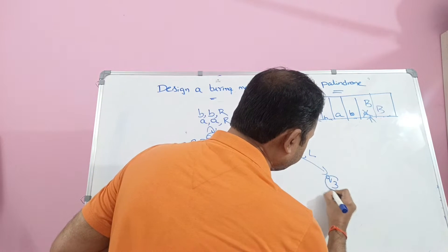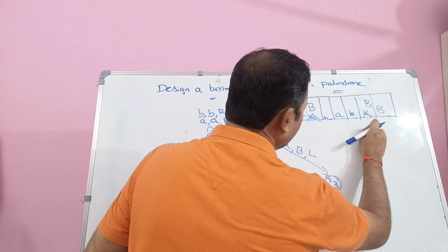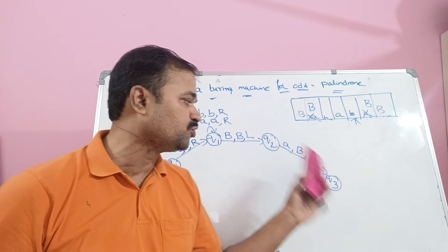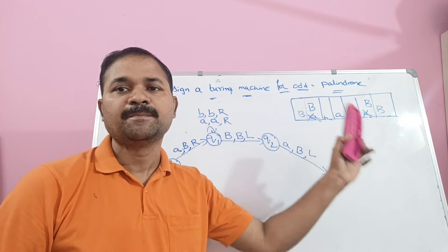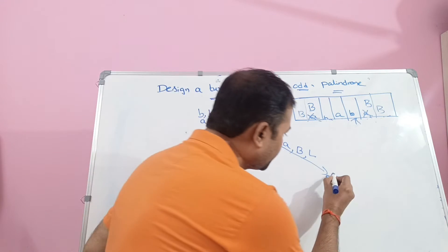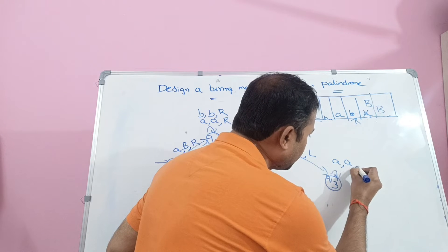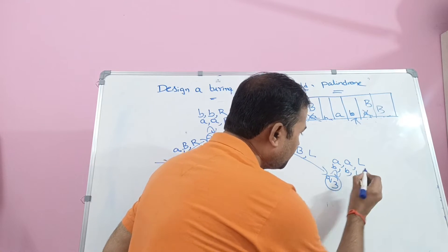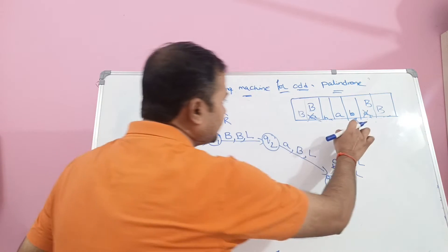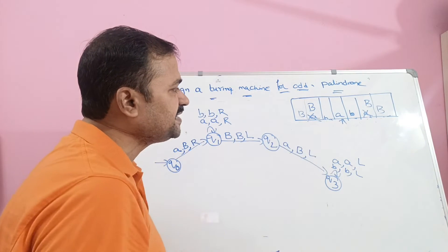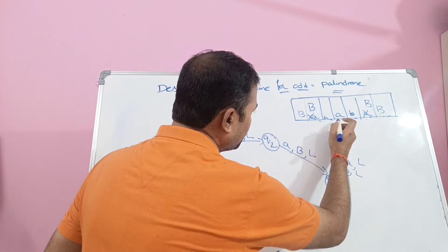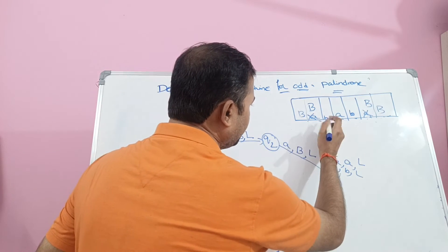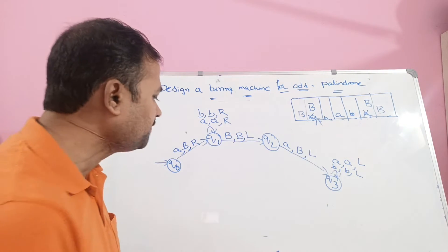We are now at Q3 state. If we apply any number of A's and B's on Q3, keep them the same but move the head towards the left until we get the blank symbol. If we apply A on Q3, keep it the same but move the head left. If we apply B on Q3, keep it the same but move the head left. We continue until we reach the blank symbol.